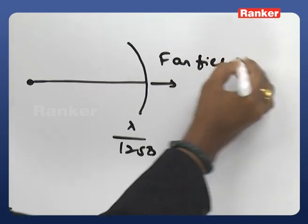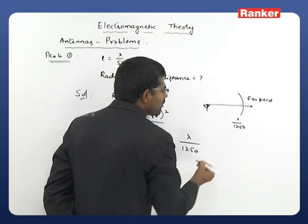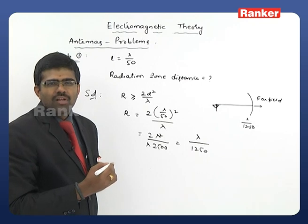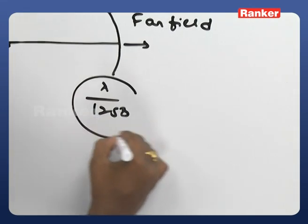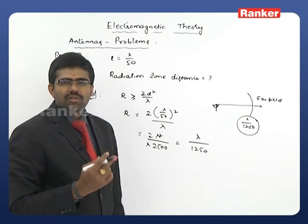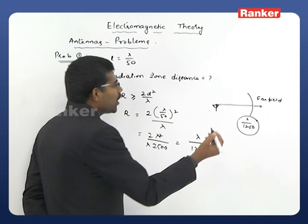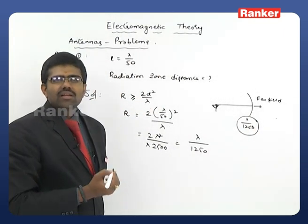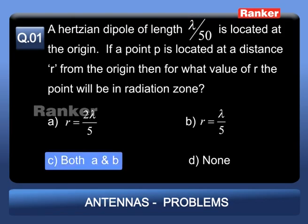Now observe the options. Both option A (r = 2λ/5) and option B (r = λ/5) are greater than λ/1250, so both points are in the far-field region. Therefore, option C — both A and B — is the correct answer.